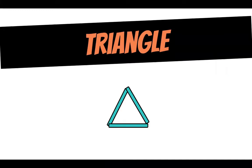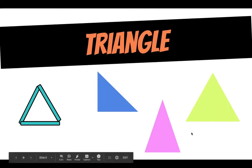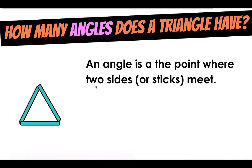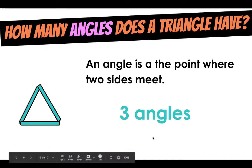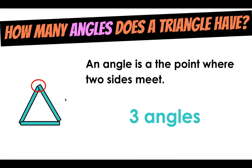What did you make? I made a triangle. Triangles can look a lot of different ways. Maybe your triangle doesn't look exactly like mine but a triangle is a shape and first we're going to talk about how many angles does a triangle have. Well an angle is a point where two sides or sticks meet.